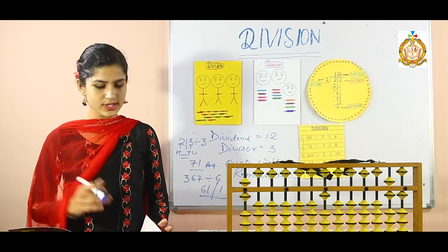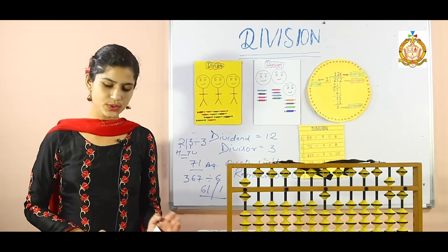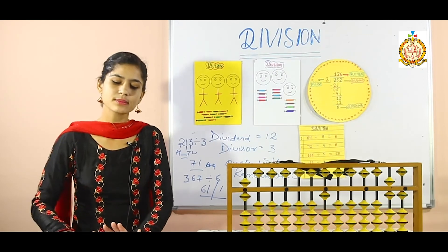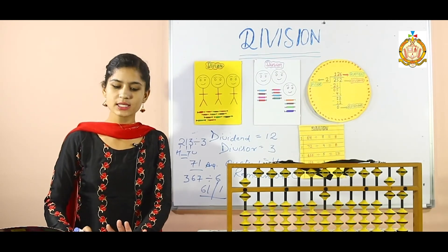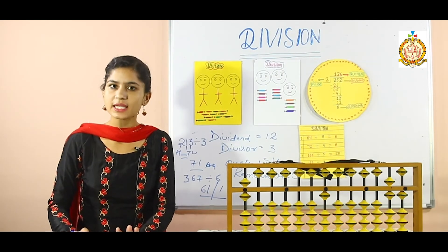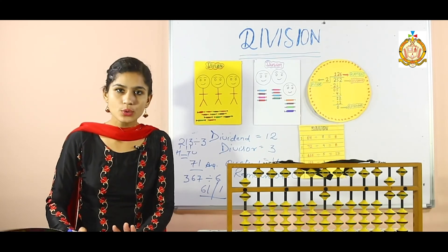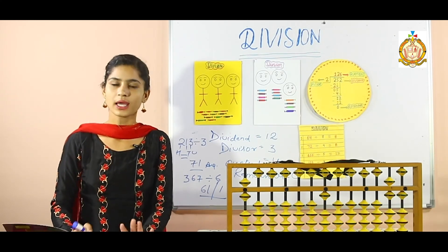This division part is only for 5th standard students. It is on your page numbers 18, 28, 38, 49, and 60. Do solve the sums at home. Thank you.